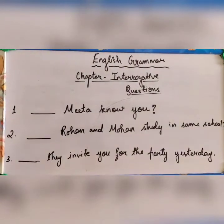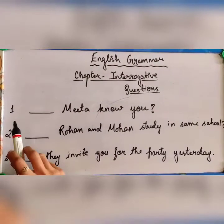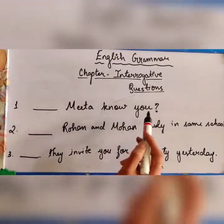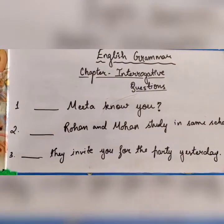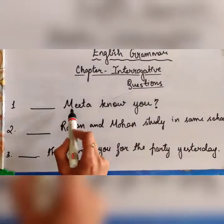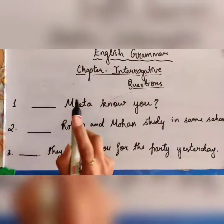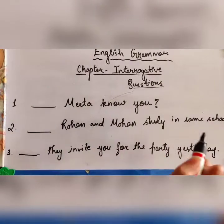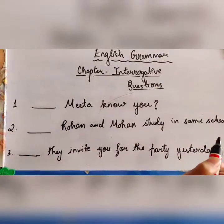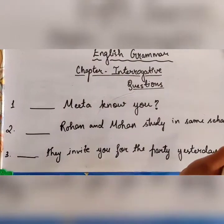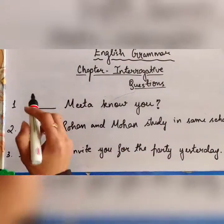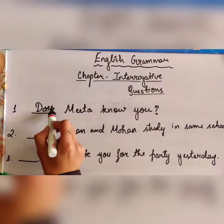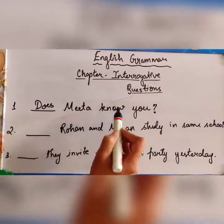First example: 'Meeta knows you.' Here we are talking about Meeta, who is a single person — singular. So we will use 'does'. The interrogative question becomes: 'Does Meeta know you?'